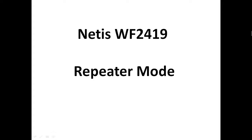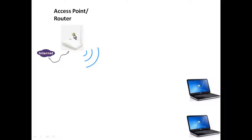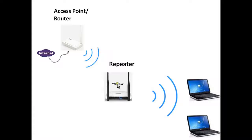Hello, welcome to Netis Tutorials. Today we will configure the Netis WF2419 device in repeater mode. This is the network diagram. This is the access point or router we are using, but the problem is that these two laptops are unable to get internet access through Wi-Fi. We will use the WF2419 as a repeater so that it can repeat the wireless signals to the network.